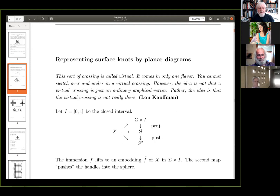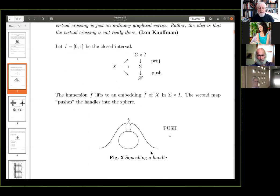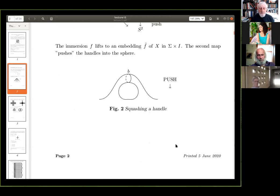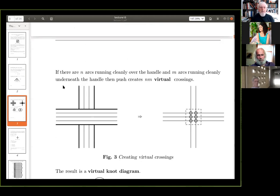So, and if we've got the closed interval, we can actually lift this immersion into an embedding in sigma cross I. So, another way of looking at a surface knot is to think of it as a proper embedding in sigma cross I. And the other way is to push it down into S2. Which is what I talked about last time. You just flatten all the handles. And what happens to all the crossings? Well, here we have a look.